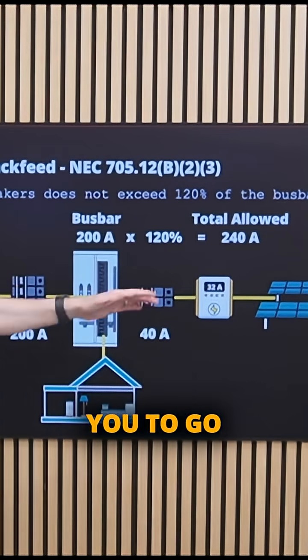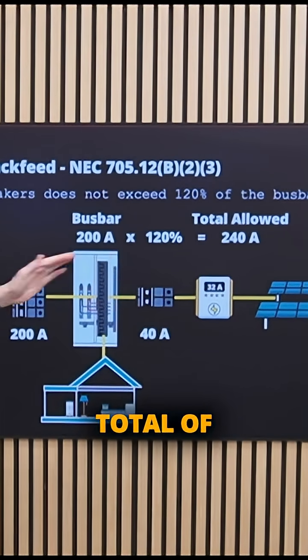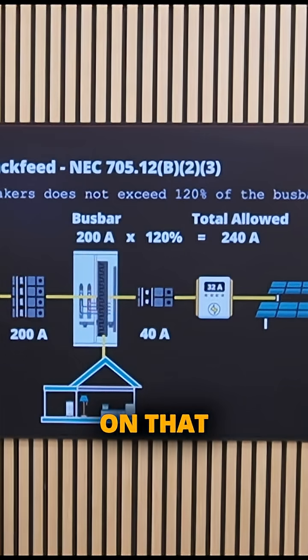So they said, look, we're going to allow you to go 20% above that 200 amps. And we're going to allow you to put a total of 240 amps on that 200 amp bus bar.